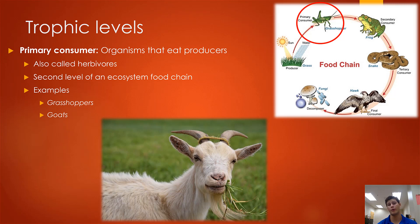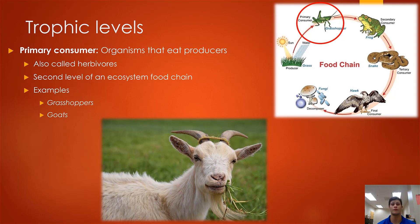After our producers, we move up one rung and reach our primary consumers. Primary consumers are organisms that eat producers — they're also known as herbivores and form the second level of any ecosystem food chain. Examples of herbivores include grasshoppers and large mammals such as billy goats.